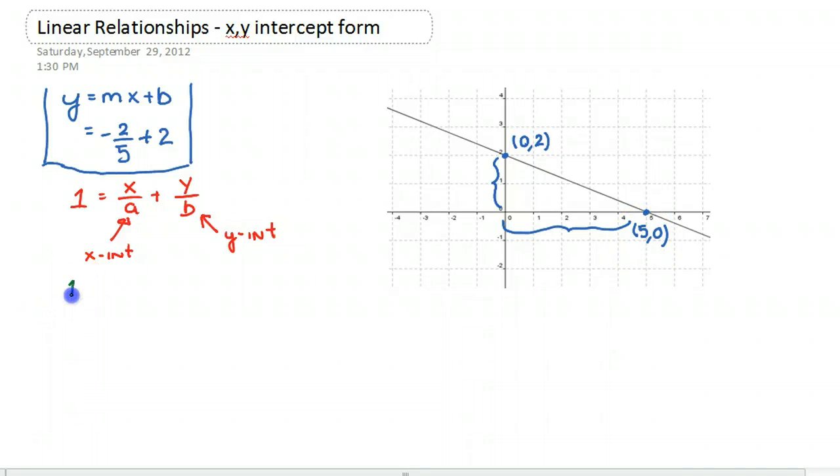So the equation will be written as 1 is equal to x over 5 plus, and the y-intercept is 2, so it's y over 2. And I'm done.